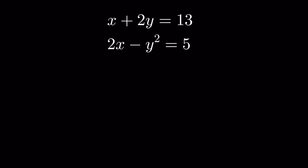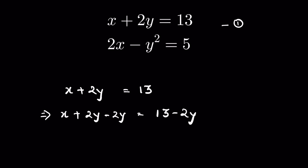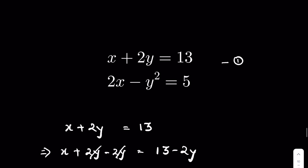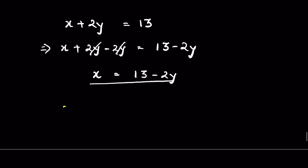If x plus 2y is equal to 13 and 2x minus y squared is equal to 5, find the value of x and y. From the first equation, x plus 2y is equal to 13. Let's subtract 2y from both sides — the 2y cancels and we get x is equal to 13 minus 2y. Now let's substitute this value of x into the second equation.